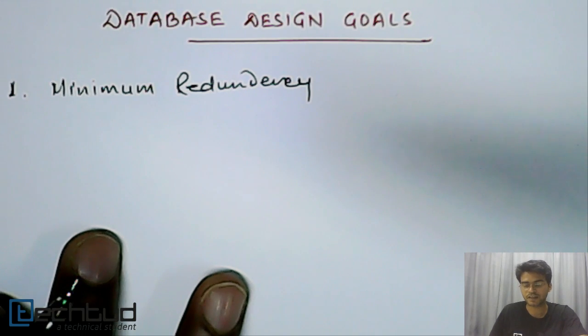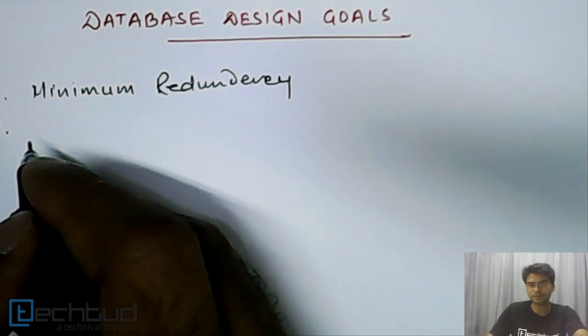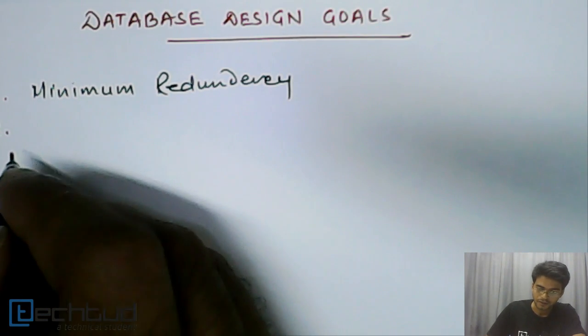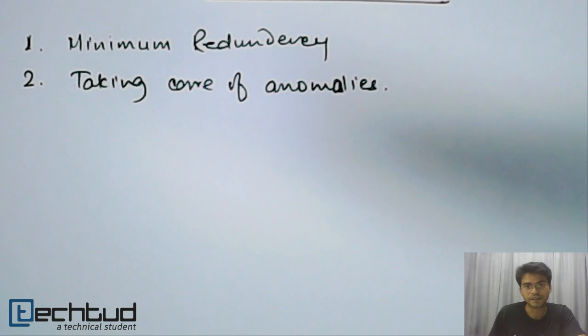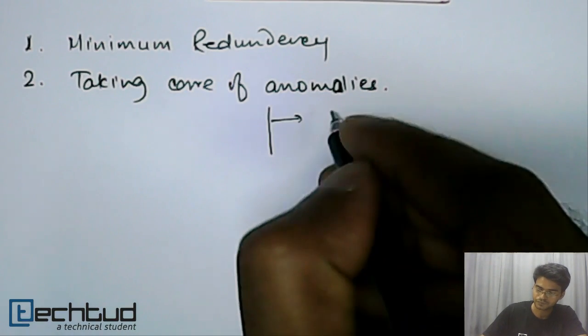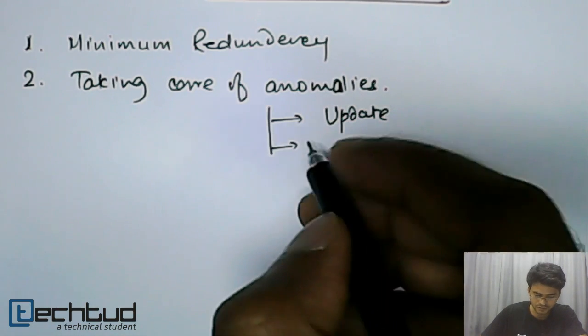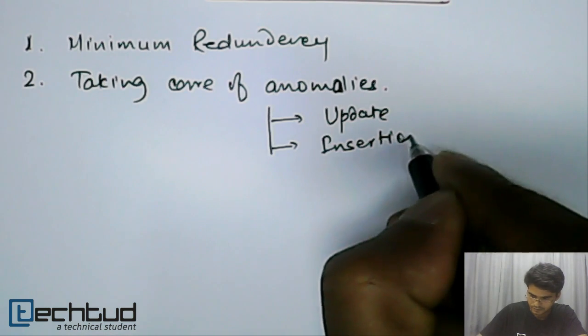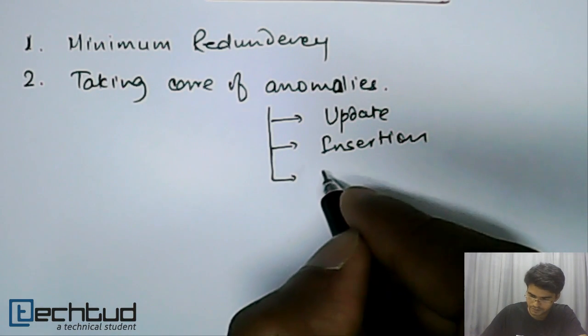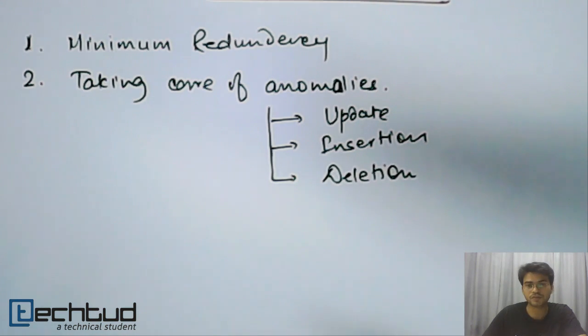We already understand what is redundancy. The second part is to take care of the different anomalies - that is updation, deletion, and insertion. There are three anomalies: first one is update anomalies, second one is insertion, and third one is deletion.